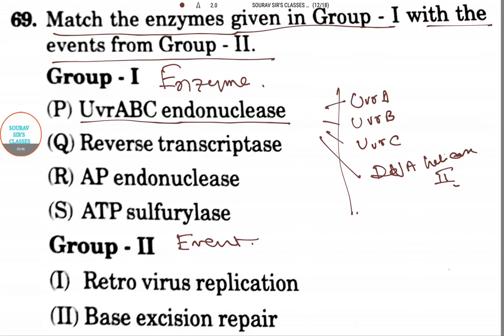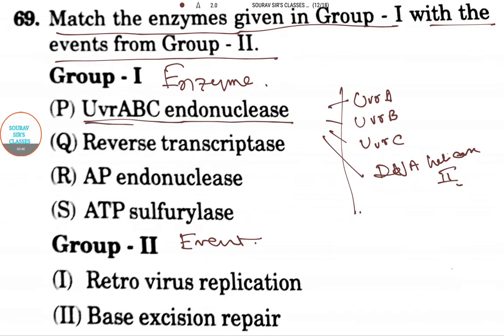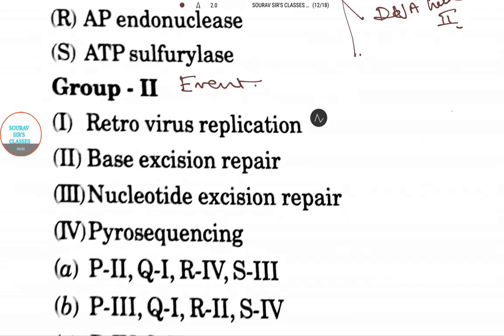In the process of nucleotide excision repair in E. coli, the enzyme UvrABC endonuclease helps in the nucleotide excision repair. So I'm writing P here.